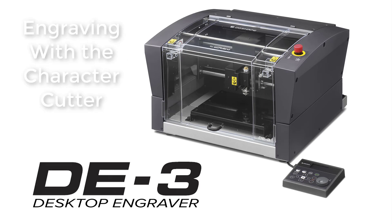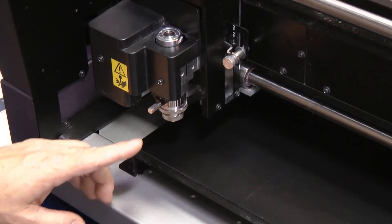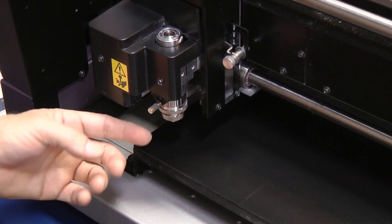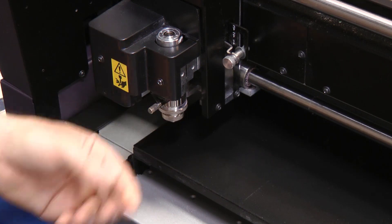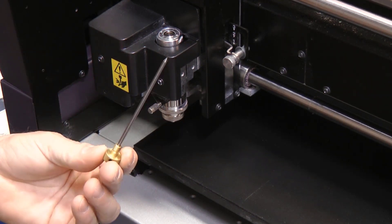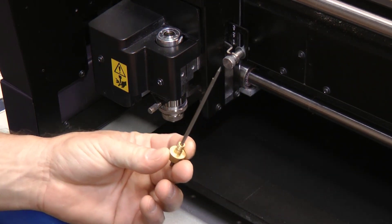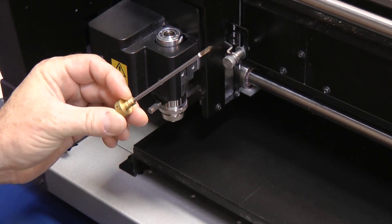Engraving with the character cutter. Now that our nose cone is set and properly installed onto the spindle, let's insert our character cutter tool into the top of the spindle and then set the depth.